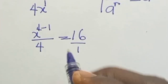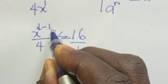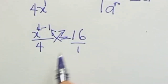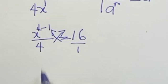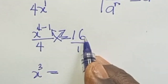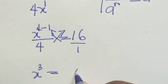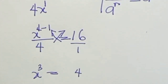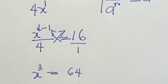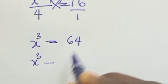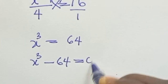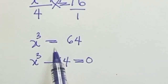We will cross multiply. So if we cross multiply, it will be s to power 4 minus 1, which is s to power 3, equal to 4 times 16. And 4 times 16 is 64. So the next line we can write: s to power 3 minus 64 equals 0, bringing 64 to the left-hand side.